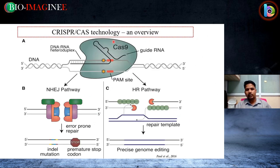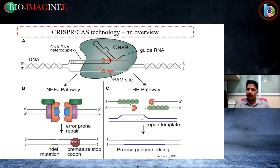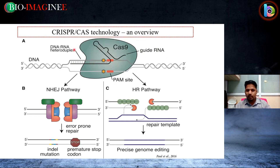In CRISPR-Cas9 technology, we provide some foreign DNA in the form of guide RNA. At the target region, we design the guide RNA. That guide RNA binds at the complementary region — forming an RNA-DNA heteroduplex. This DNA-RNA heteroduplex is recognized by Cas9 nuclease, which is an RNase-type III nuclease. Upon recognition, it chops up the DNA.